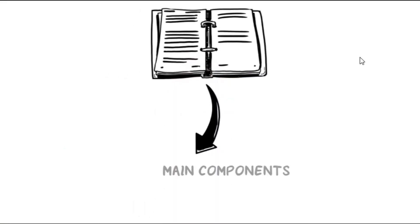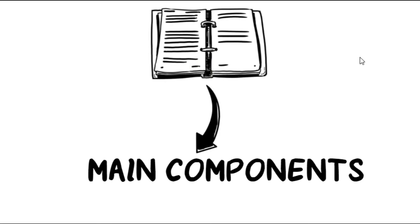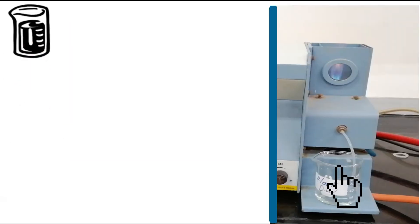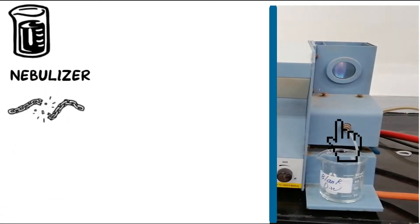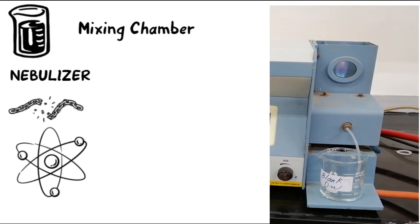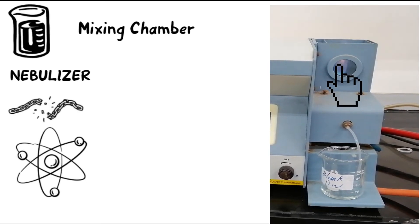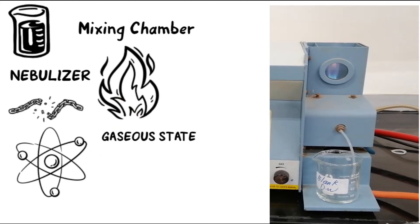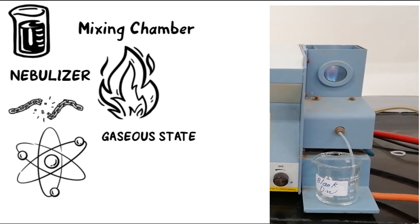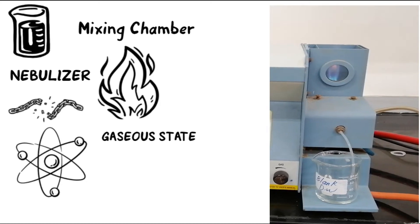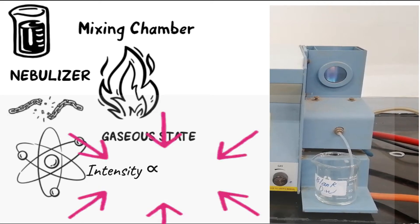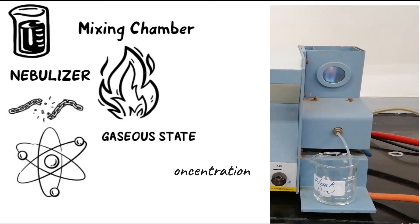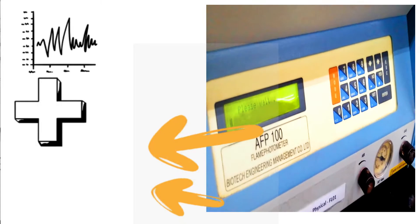Now let us look at the main components of flame photometry. The substance being tested is put through a nebulizer where it breaks up into atoms. The mixing chamber mixes the fuel solution with the sample and transports the solution into the flame at a steady rate to produce gaseous atoms and ions. These ions absorb energy from the flame, get excited to high energy levels, and as they are unstable, return to the ground state while emitting characteristic radiation.